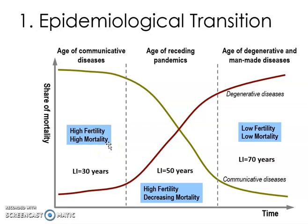The second stage is the age of receding pandemics. Fertility is still high but decreasing, and mortality is also dropping. People are living a bit longer and starting to get vaccinations, though a couple of generations still need to be vaccinated, so mortality remains relatively high but is slowing. This corresponds to stage two and early stage three of the DTM.